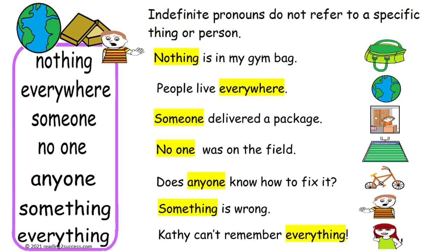Now it's time to introduce kids to our last type of pronoun: indefinite pronouns. They do not refer to a specific thing or person. They are: nothing, everywhere, someone, no one, anyone, something, and everything. Read the sentences: Nothing is in my gym bag. People live everywhere. Someone delivered a package. No one was on the field. Does anyone know how to fix it? Something is wrong. And Kathy can't remember everything.